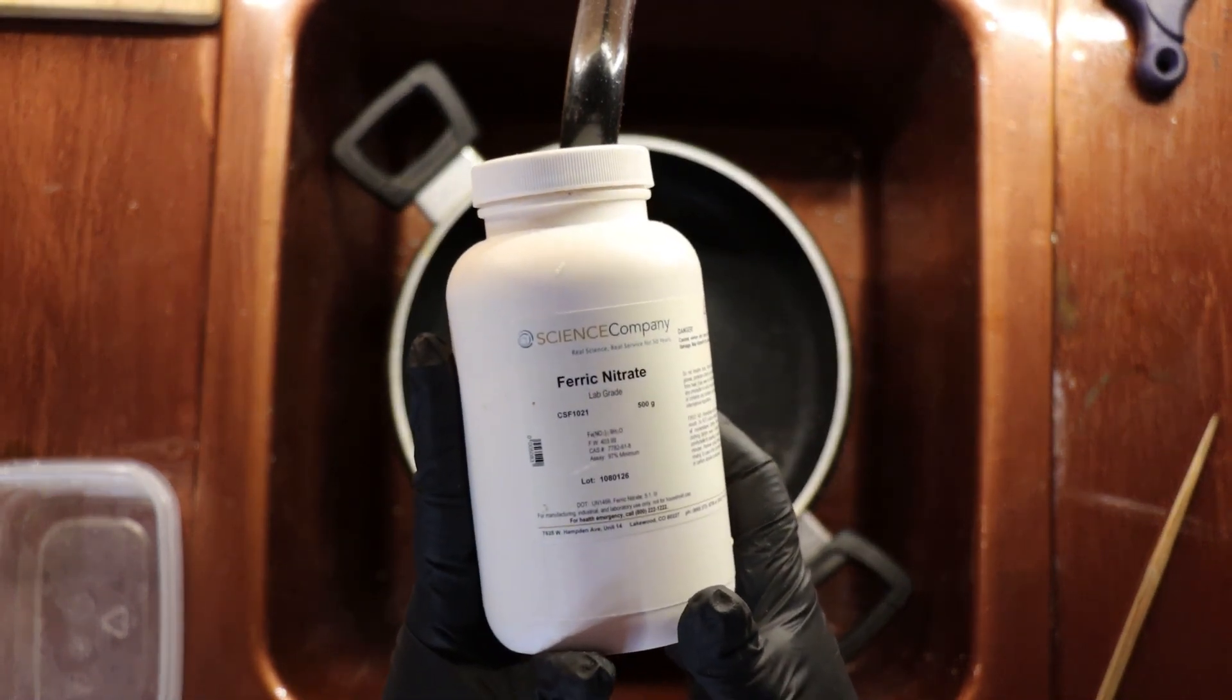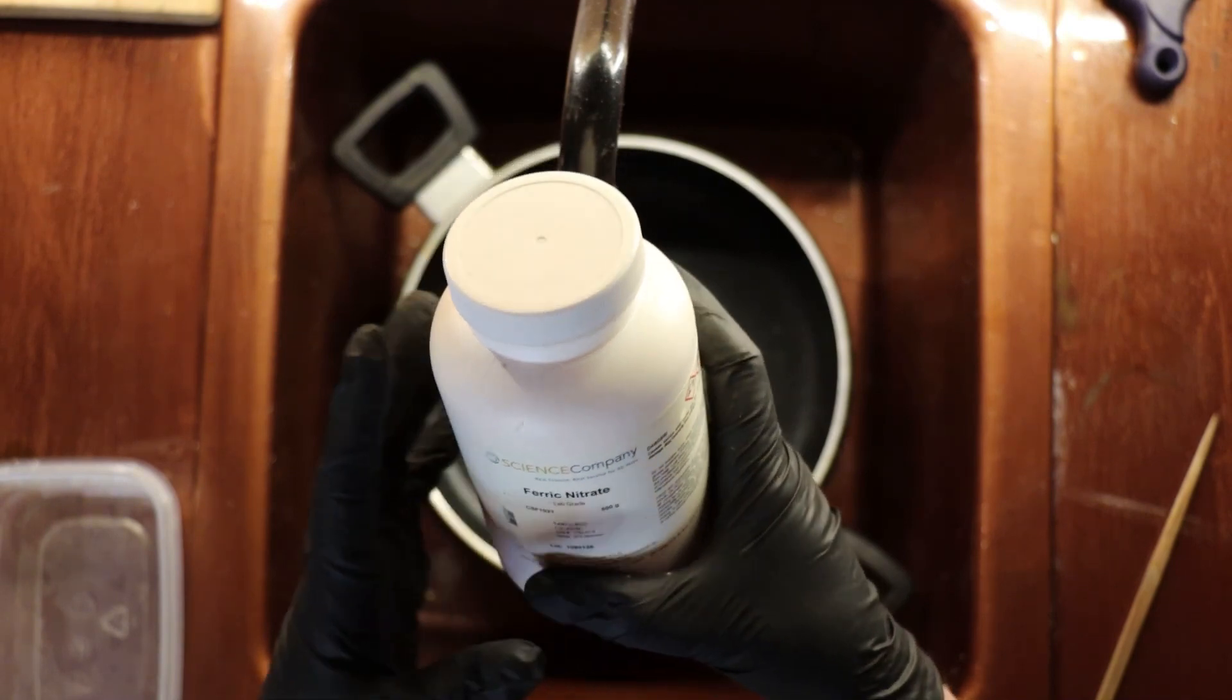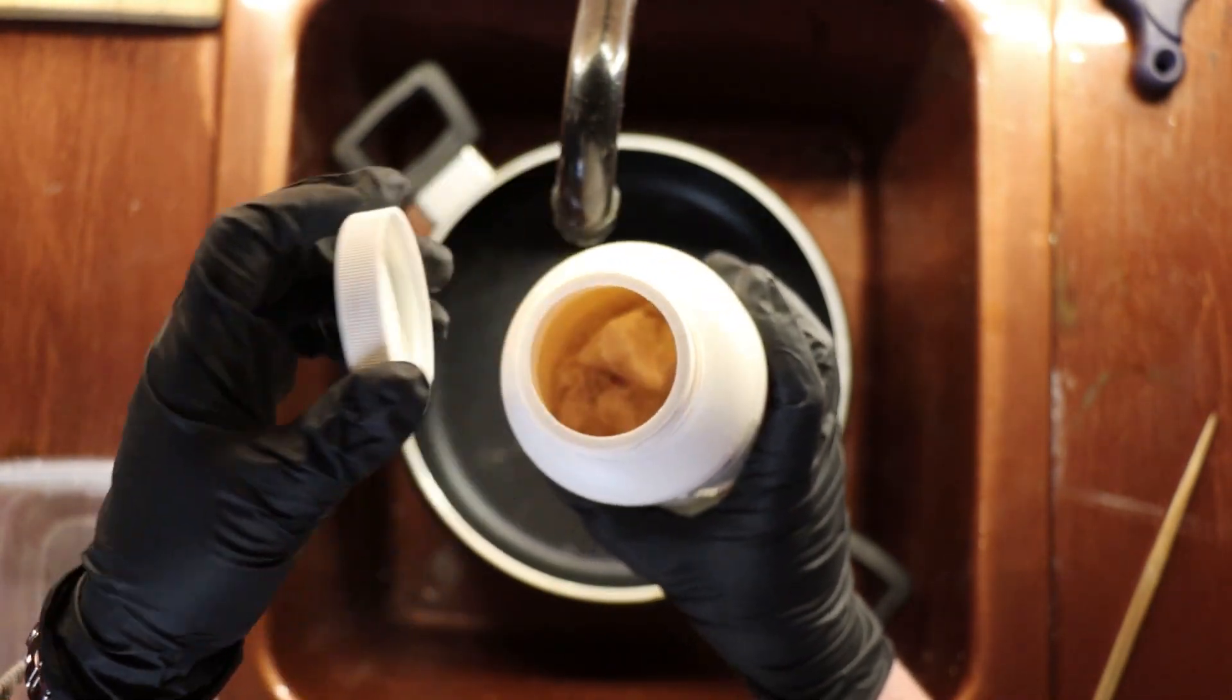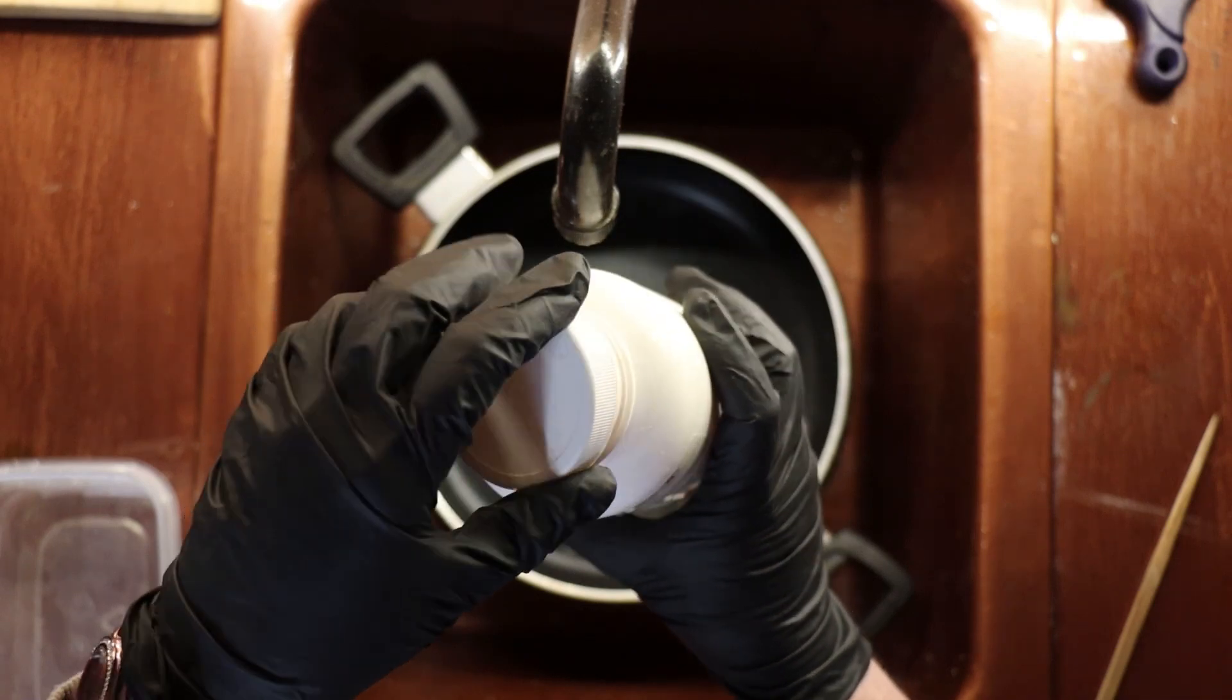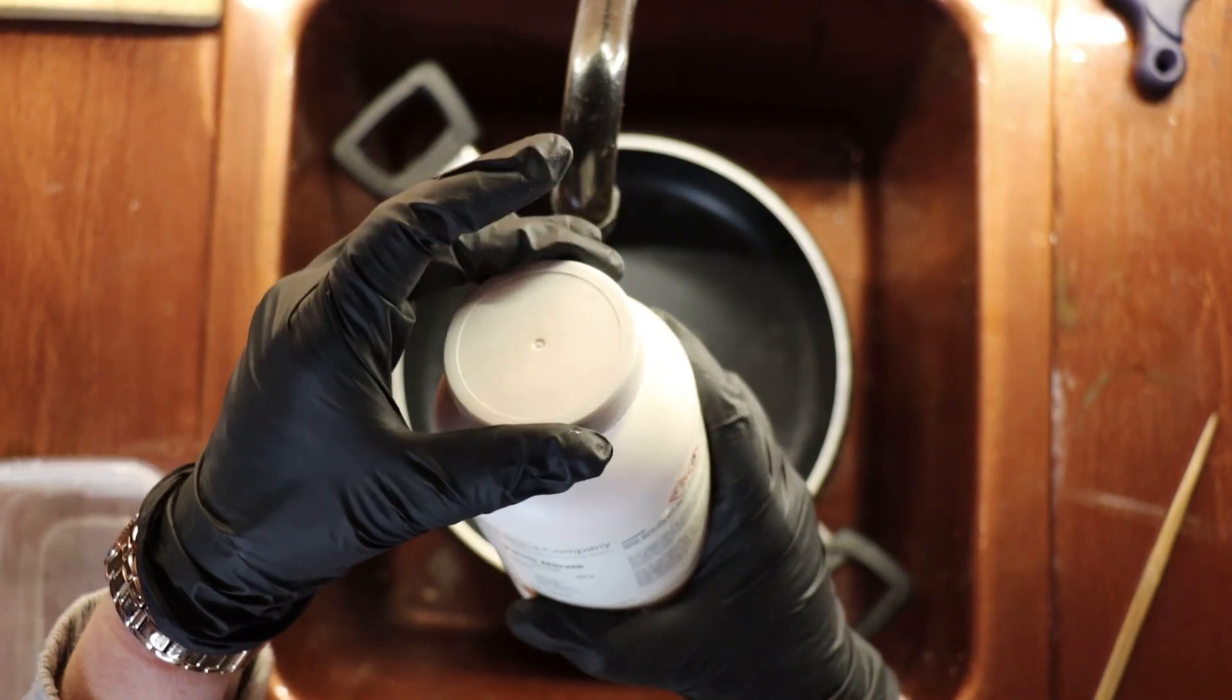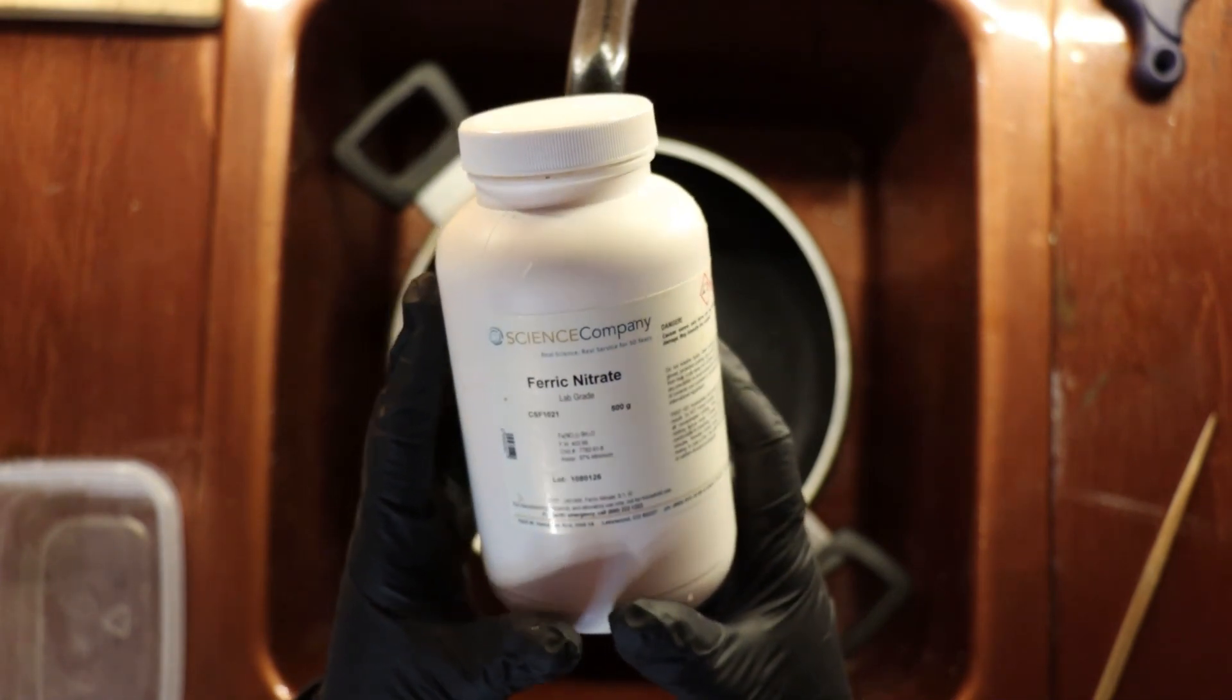I get my ferric nitrate from a company called Science Company, and you can find it online. I get the 500-gram bottle. You can see that it is a kind of purple crystal, and you mix this with water to get your etching solution. There's also a way that you can electro etch, but for my process I just use the ferric nitrate.